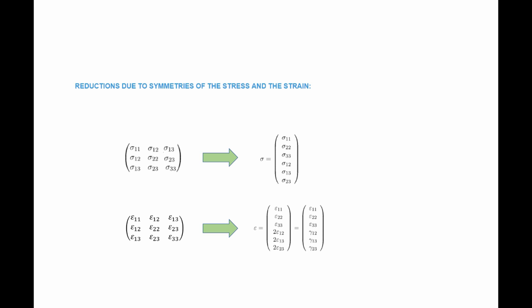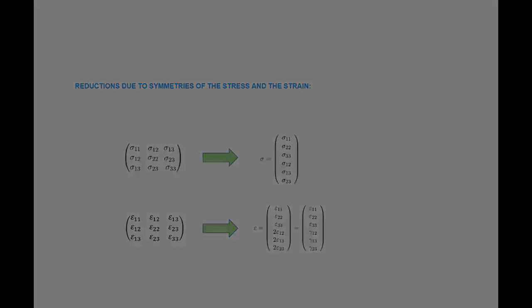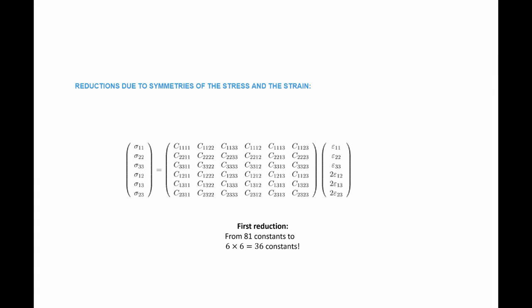Similarly, the strain is a three-by-three symmetric matrix, so we extract six independent components and look at a vector representation for the strain. In this vector representation we multiply epsilon_12, epsilon_13, and epsilon_23 by 2, which gives us the engineering shear strains. So now instead of 81 constants we only need 36 constants to describe the relationship between the six components of the stress and the six components of the strain.